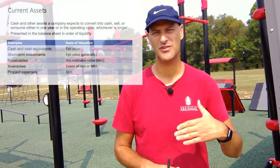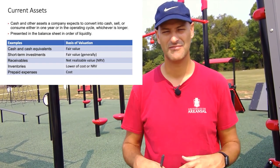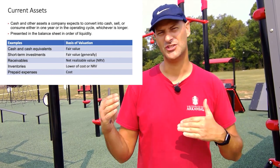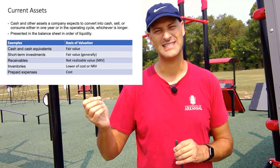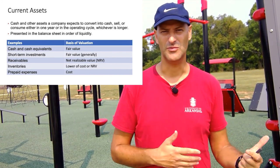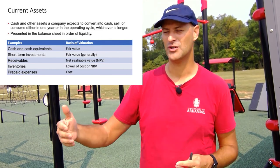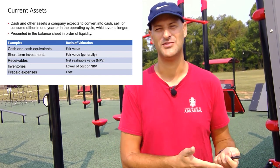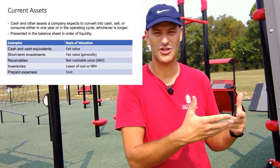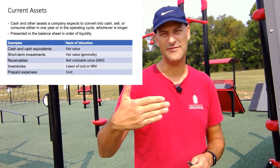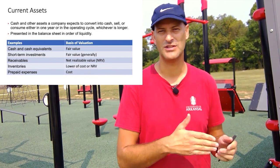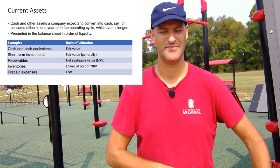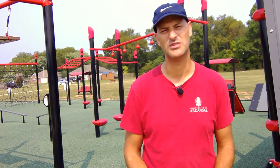In terms of basis of measurement for current assets: cash and cash equivalents are measured at fair value. Short-term investments are generally fair-valued. Receivables are valued at net realizable value — the amount the company expects to collect. Inventory is the lower of cost or net realizable value; you can't write it up as soon as you buy it hoping to sell it for more. If you can't sell it for what you paid, you write it down. Prepaid expenses are cost minus the used-up portion of the expense.